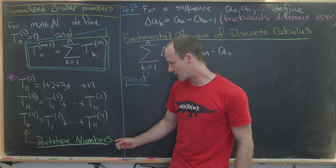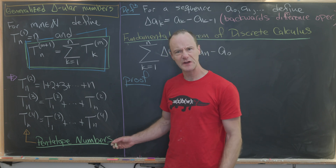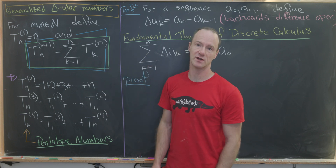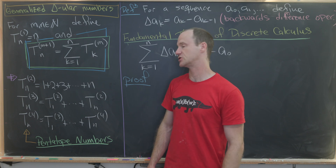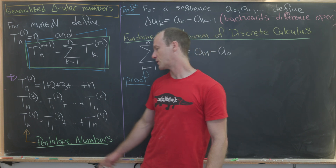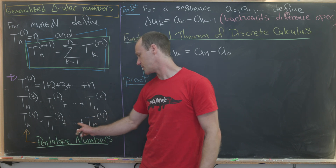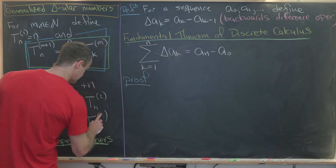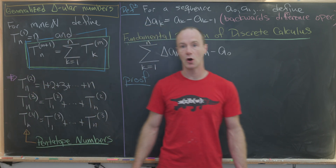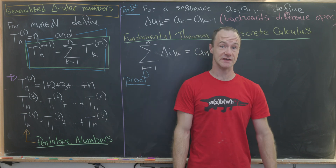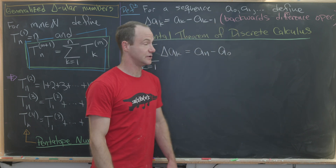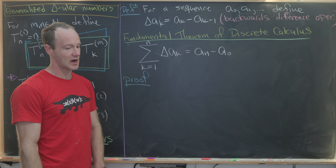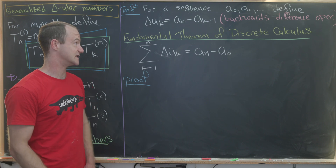One step above the tetrahedral numbers are the so-called pentatope numbers. You can think of these as numbers where the dots are arranged in some sort of four-dimensional tetrahedron, although that's obviously hard to visualize. We have t_n superscript four as the sum t₁³ plus all the way up to t_n³. Our remaining goal is to find a closed form for all of these, and we'll do that using discrete calculus — one of my favorite tools, which always seems like magic.